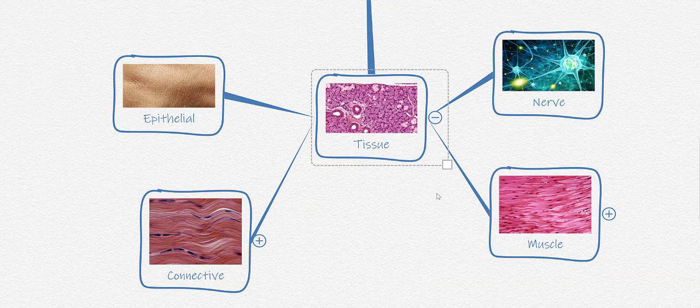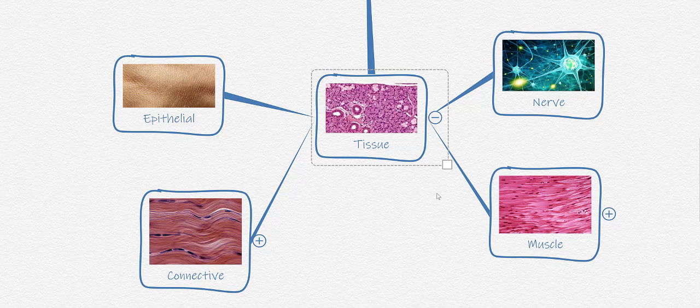We have epithelial tissue, which covers and lines body surfaces, provides protection, and regulates secretion and absorption. We have nervous tissue, which is the body's communication system. We have connective tissue, which connects, binds, supports, and protects. And finally, we have muscle tissue, which has the unique ability to produce force.